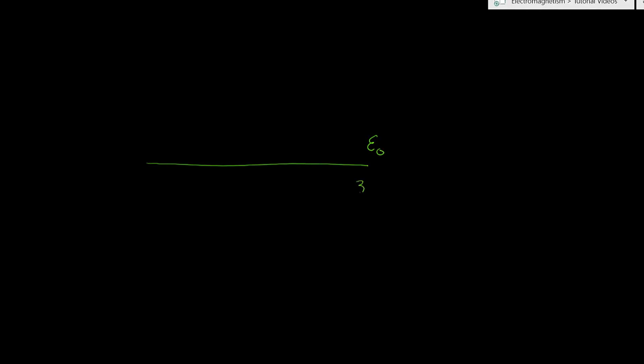I just want to quickly explain how to deal with a problem with an electric field going between two mediums. So imagine we have this boundary right here, and this medium is air, and we have a permittivity of epsilon zero. And then here we'll have this other dielectric medium that has a permittivity of three epsilon zero.